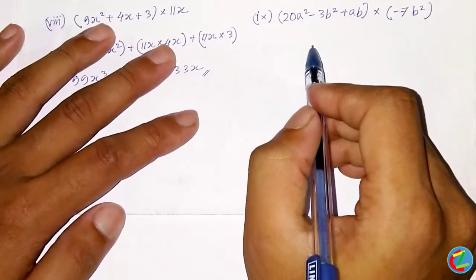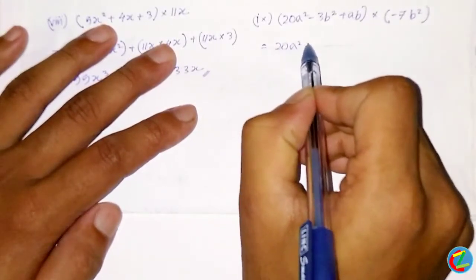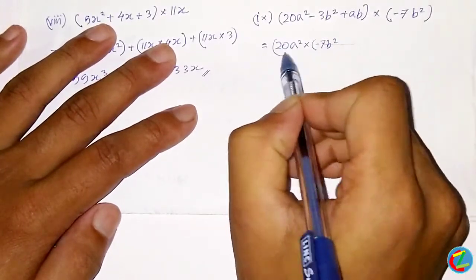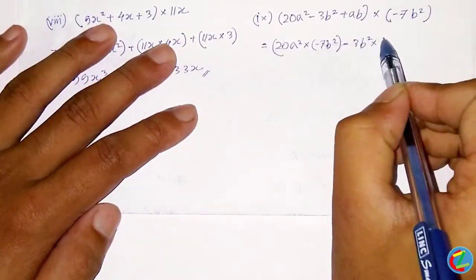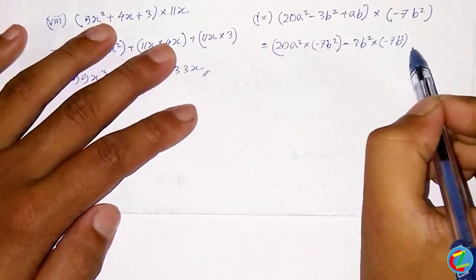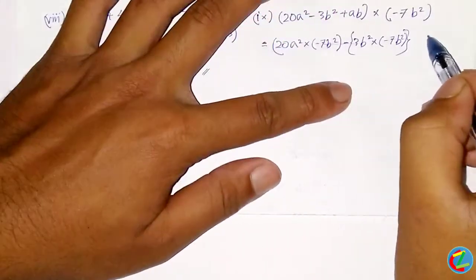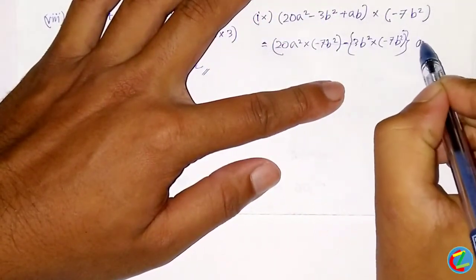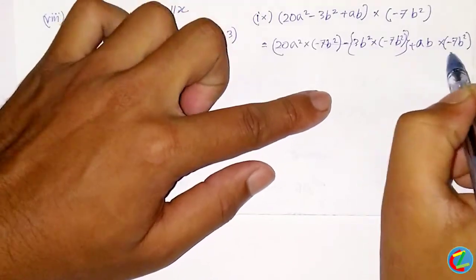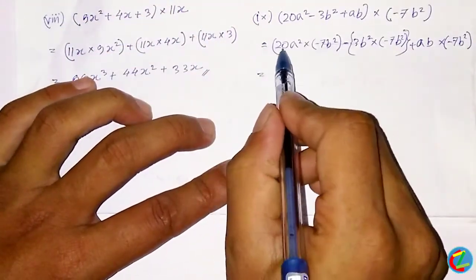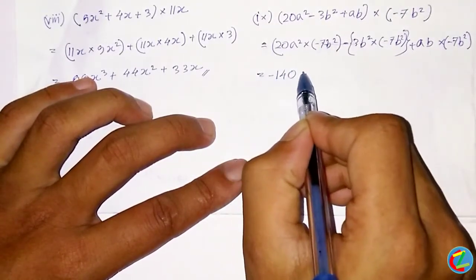2a squared minus 7b squared plus ab. 2a squared into minus 7b squared, minus 7b squared into ab. We get minus 14a squared b squared plus the volume.